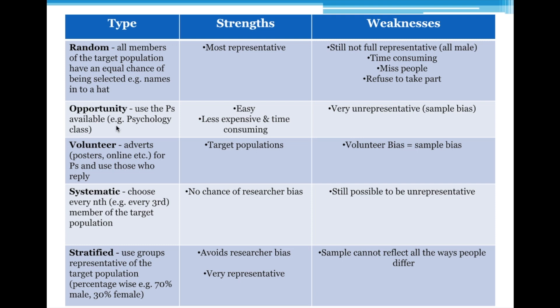Opportunity sampling is probably the most commonly used type. This is where you use the opportunity that's available — you take the people that are there at the time. It's quite often used in psychological experiments where professors get participants from their own classes. It could also be you turning up on a high street and asking people to fill in your questionnaire — you're taking the opportunity to use the people in front of you.